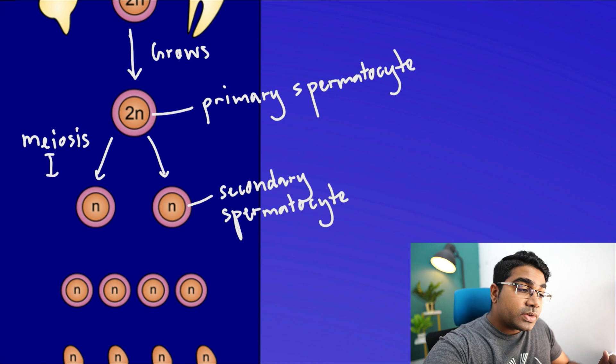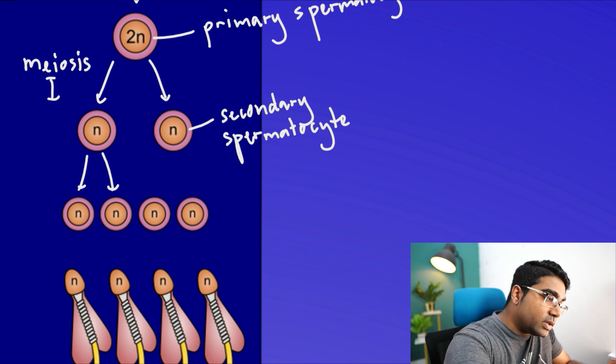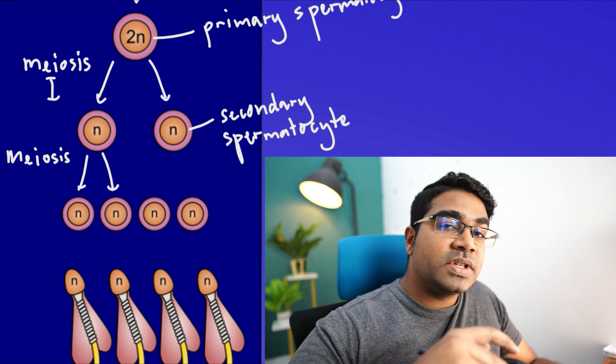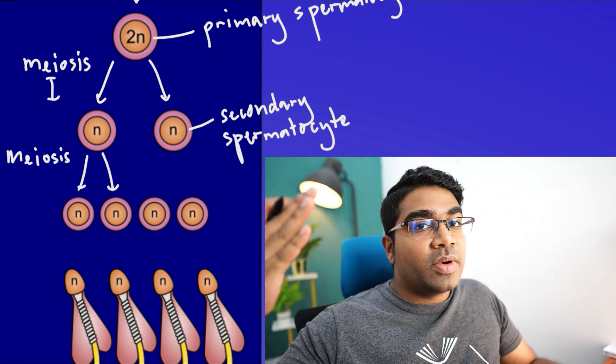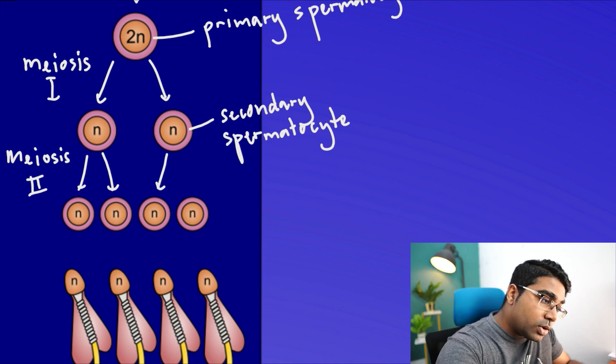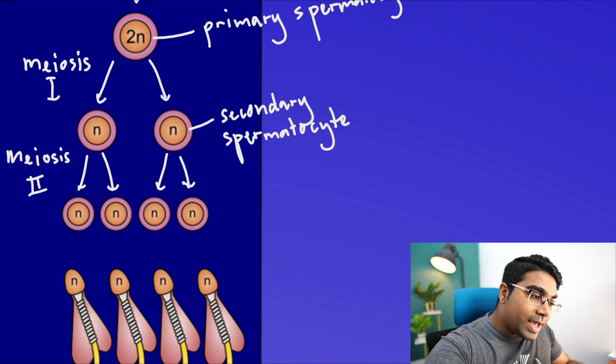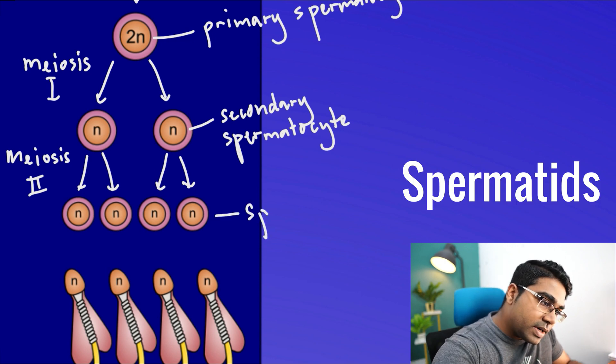The secondary spermatocytes then undergo the second meiotic division, with each producing two daughter cells. The second meiotic division does not reduce the chromosome number further, so the daughter cells also have the haploid number N. These are known as spermatids.